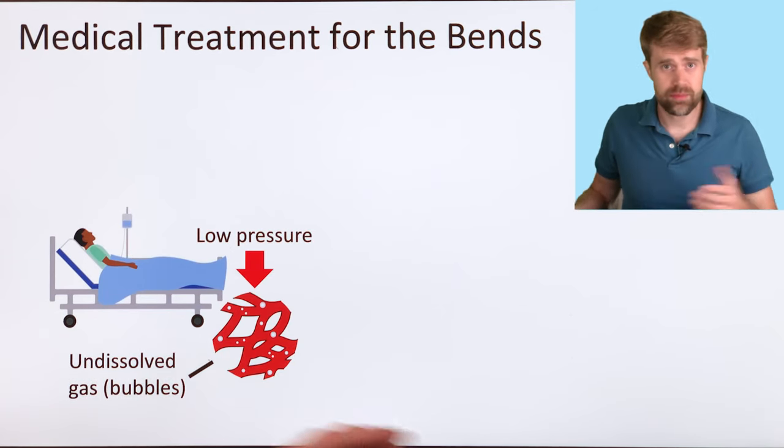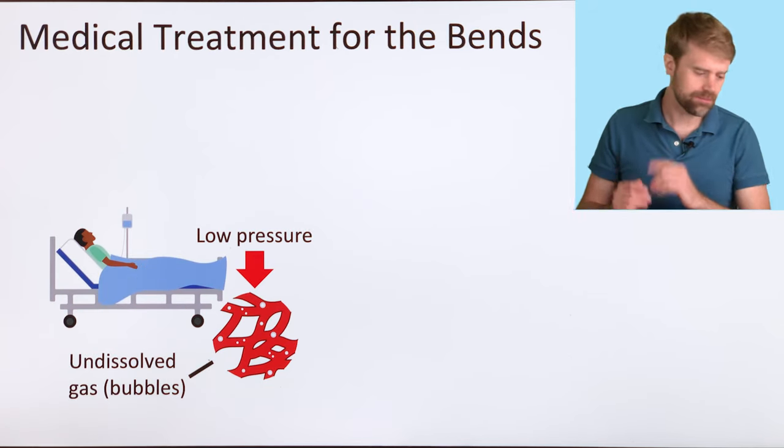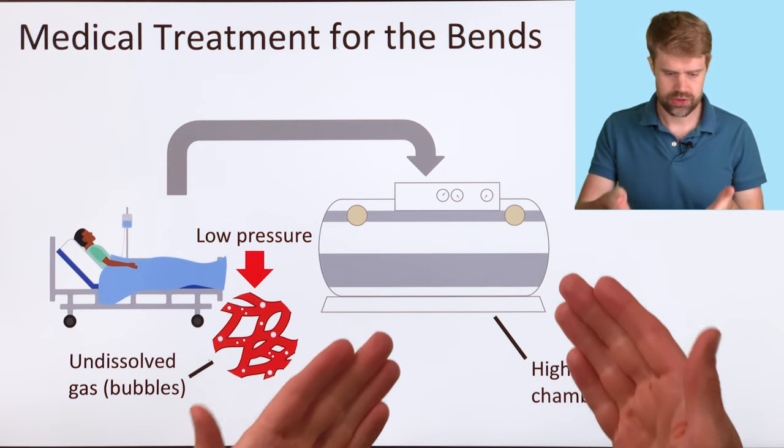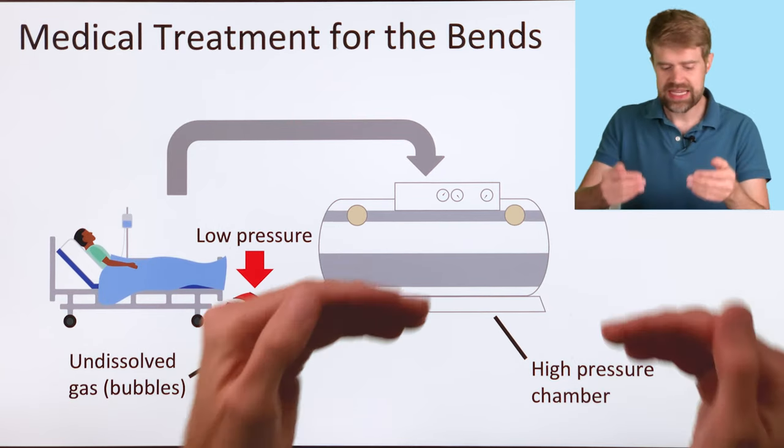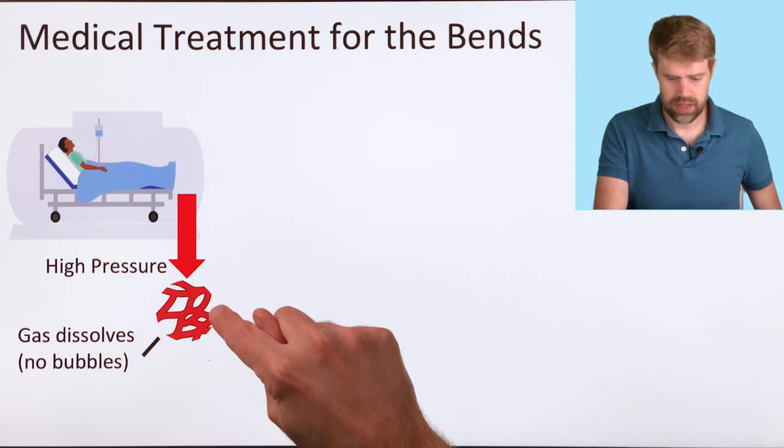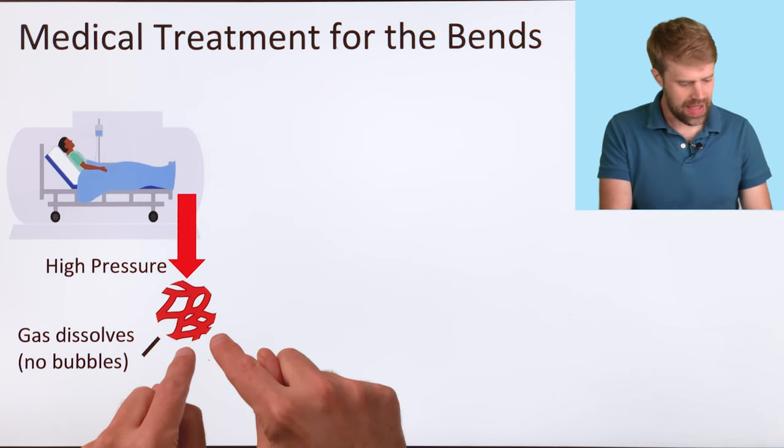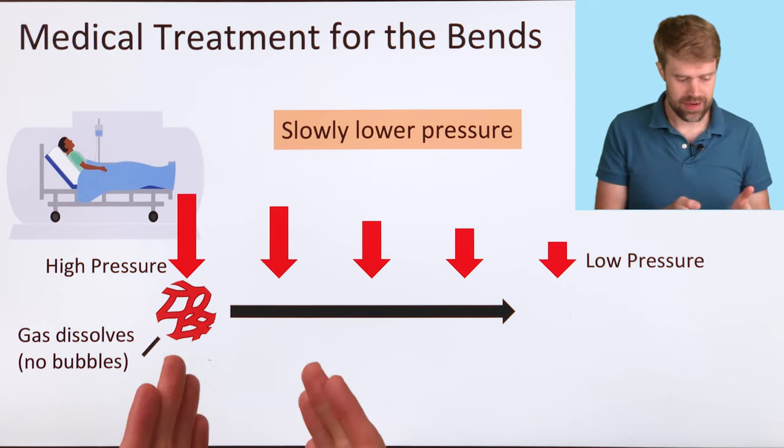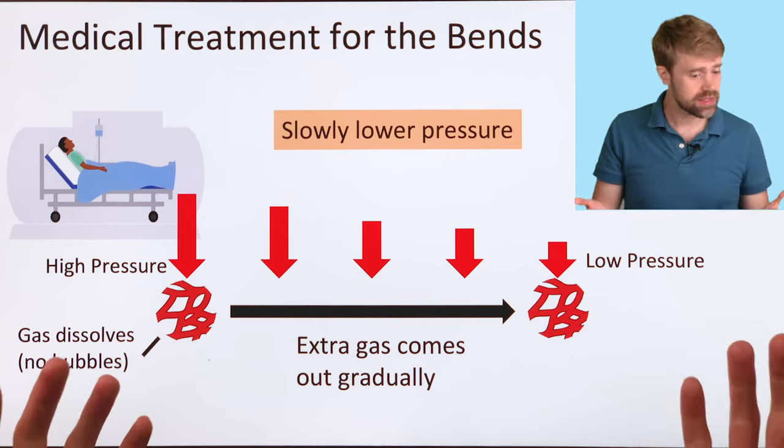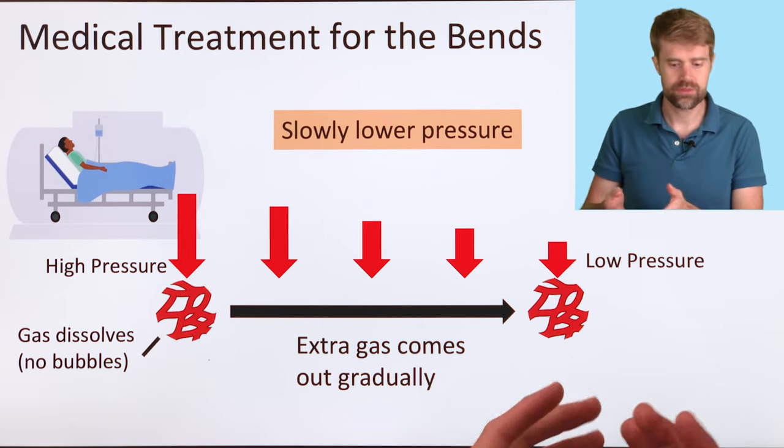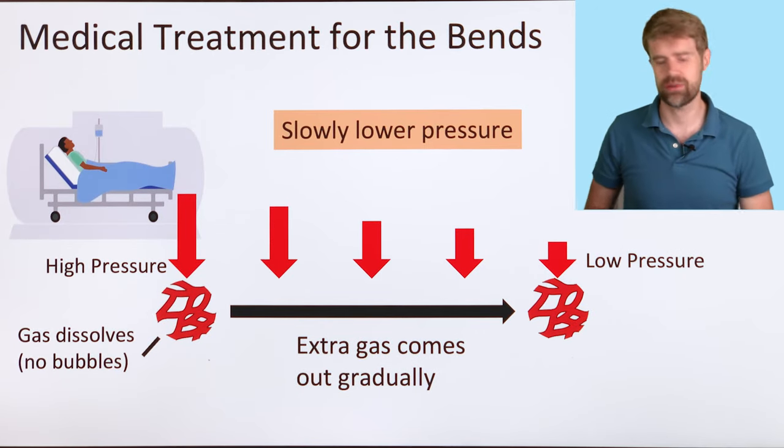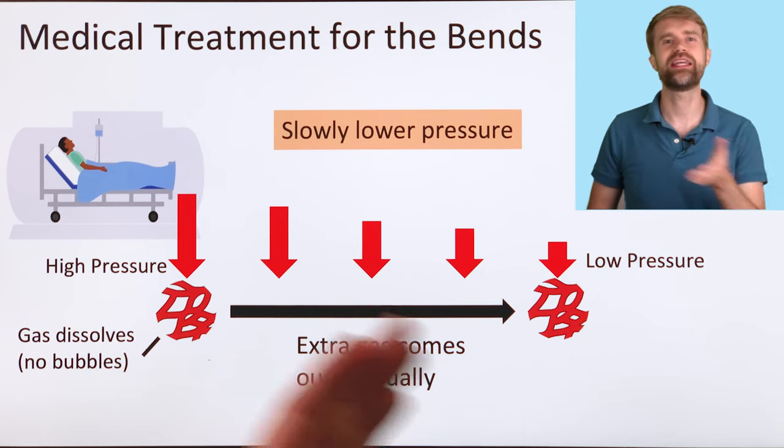Now, if someone is suffering from the bends, what can be done about it? Well, they're probably going to need medical treatment. The diver is placed into a high pressure chamber. This allows doctors to increase the pressure. The high pressure increases the gas solubility again, so the extra gas dissolves back into their blood. Then, the pressure is decreased very slowly. This lets the extra gas come out gradually, just like swimming very slowly to the surface. If Henry's law got them into trouble, Henry's law can be used to get them back out.